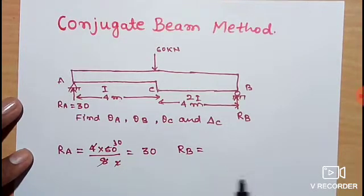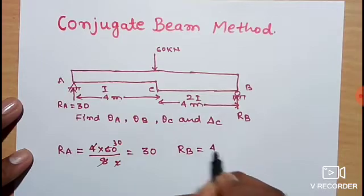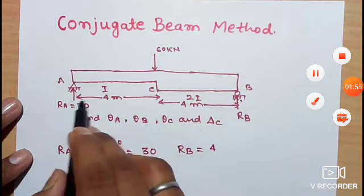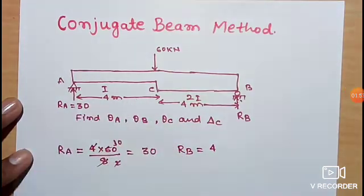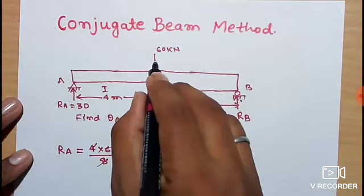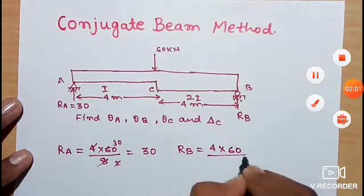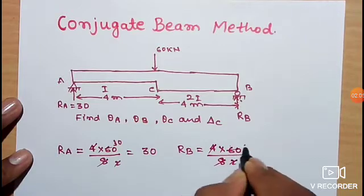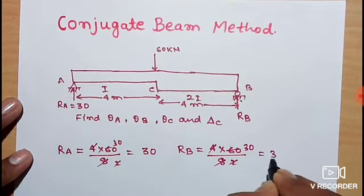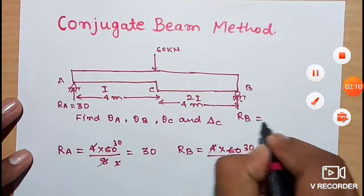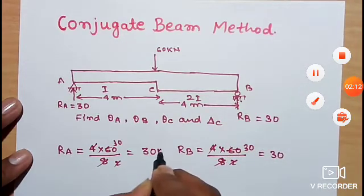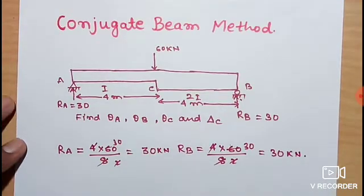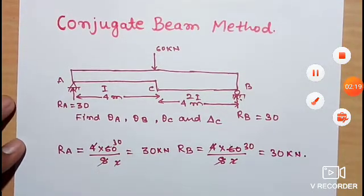Similarly, for Rb, we take the opposite distance: 4 into 60, divided by total distance 8, which again gives 30 kN. So Rb is 30 kN. Both Ra and Rb are 30 kilo Newtons. The first step is now completed.